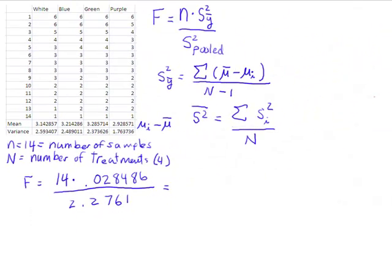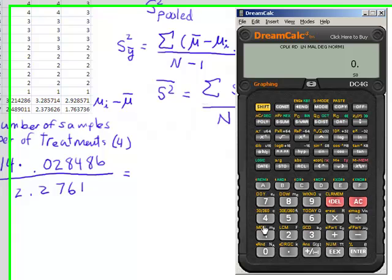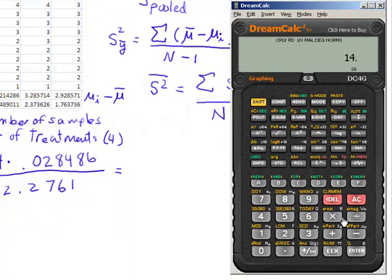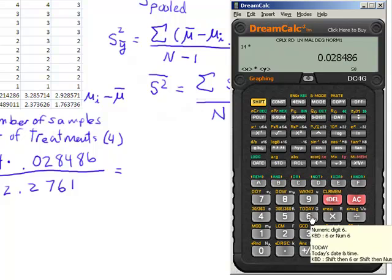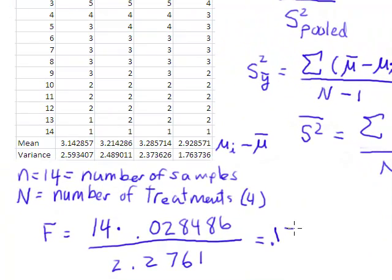And so I can compute this. And bring in my calculator here. And so I have 14 times .028486 divided by 2.2761, and so that's equal to .1752.